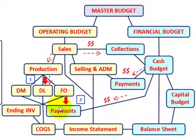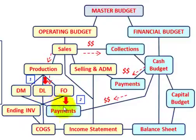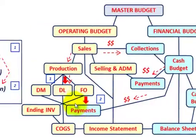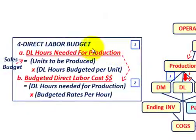First we're going to determine our direct labor requirements, and then we're going to determine the cash payments for direct labor. Let's look at an outline of our direct labor budget. First, we have to determine the direct labor hours needed for production.